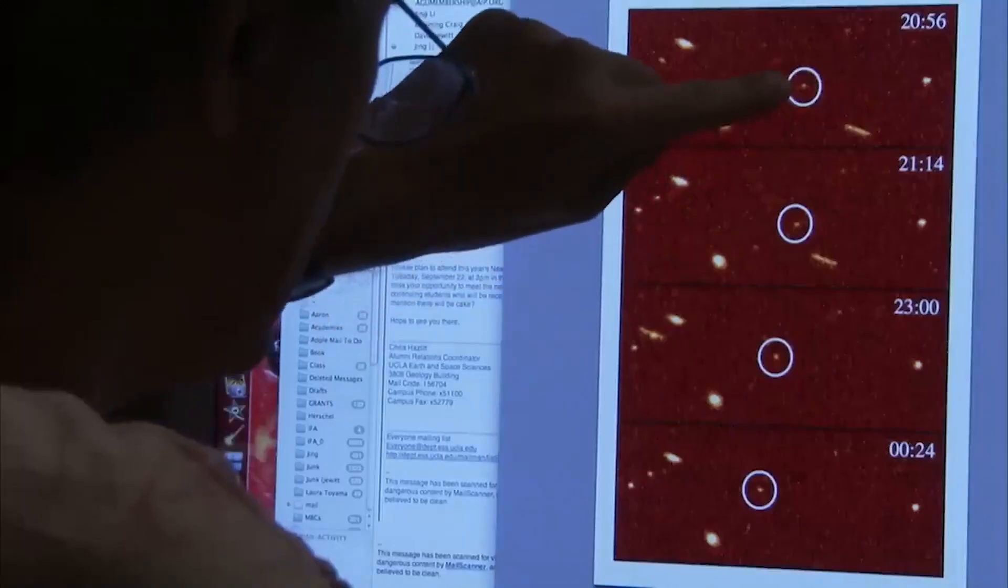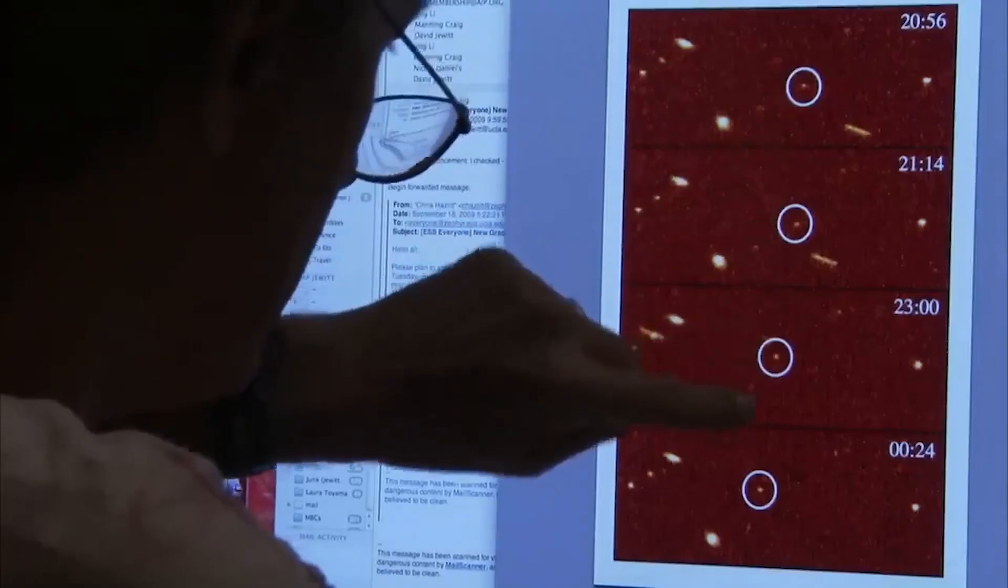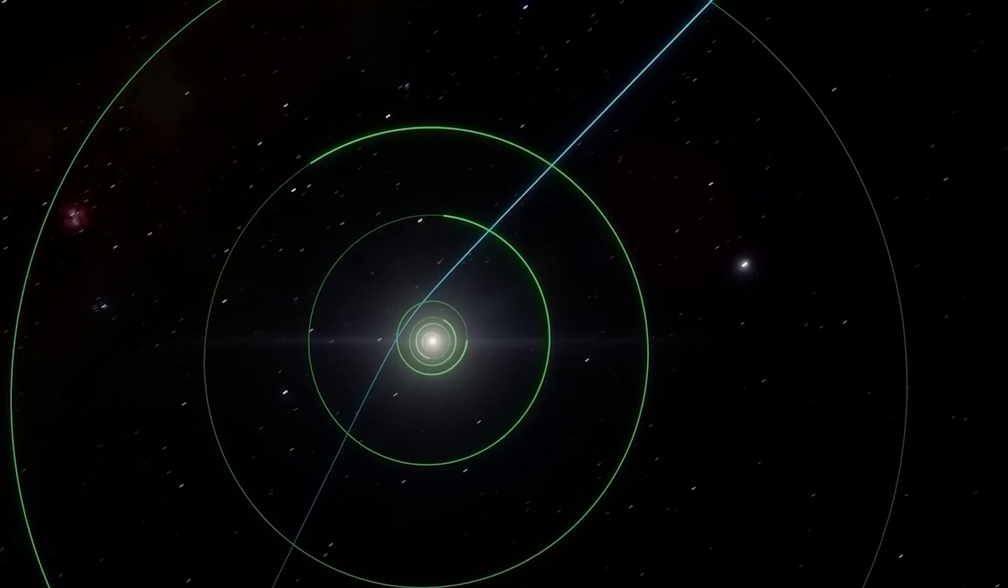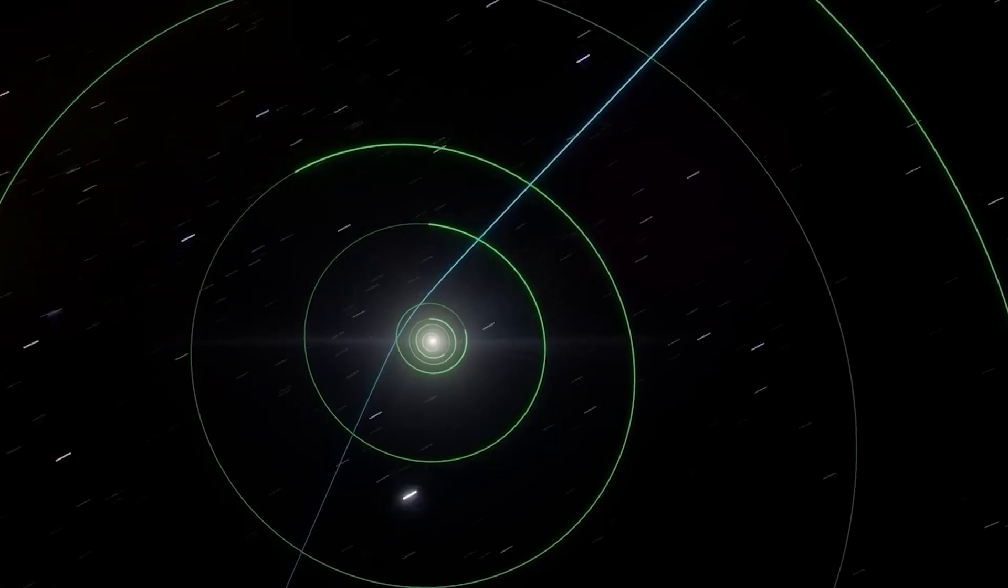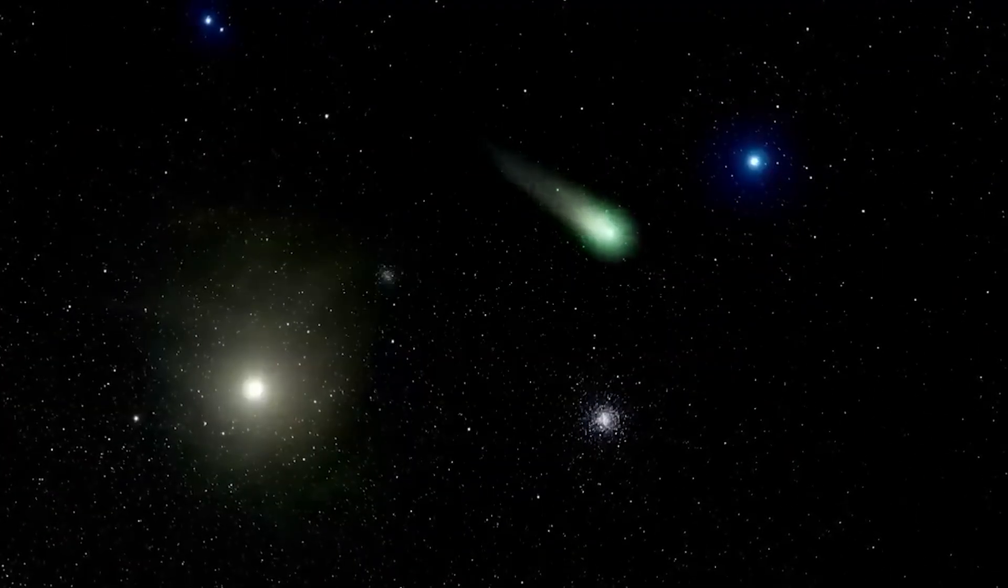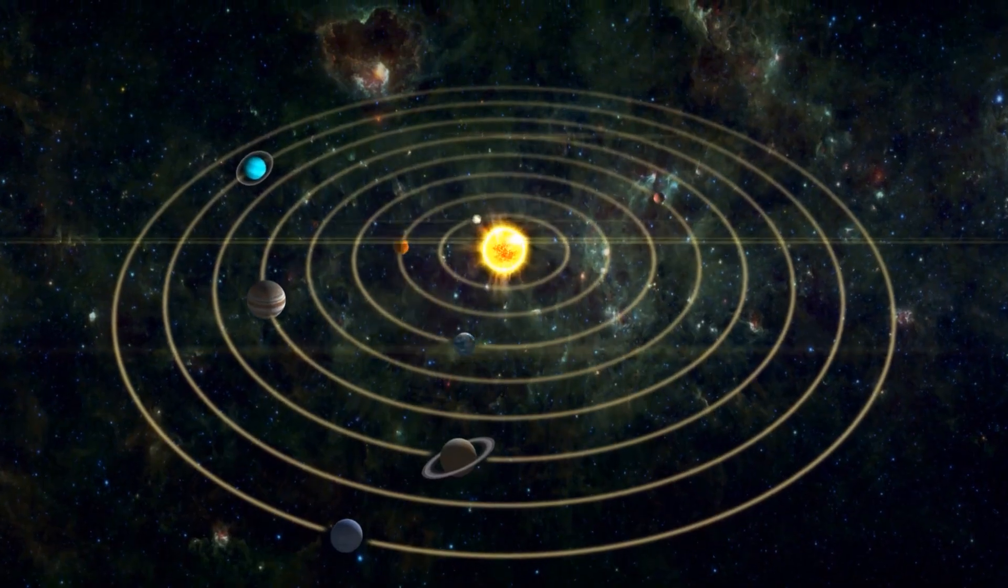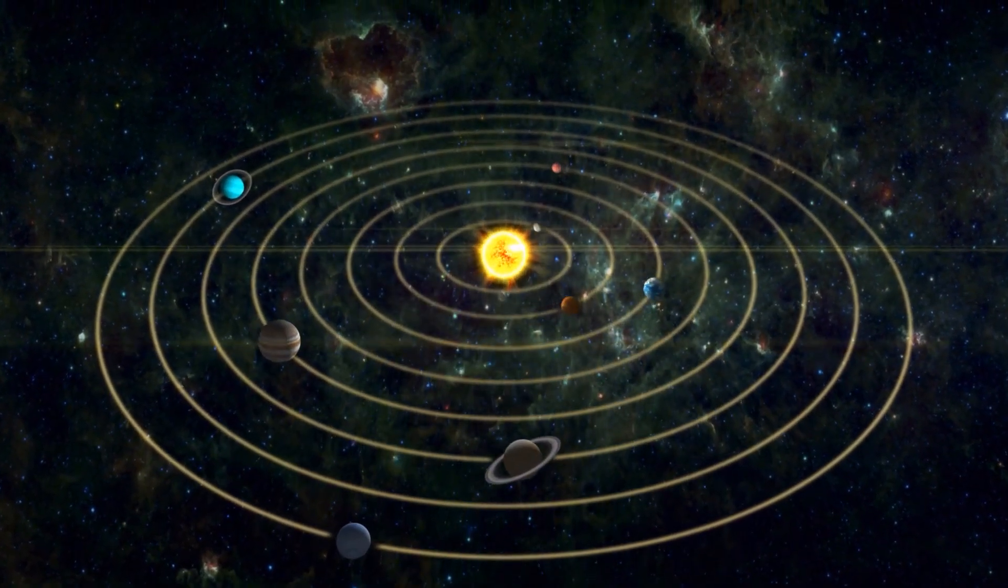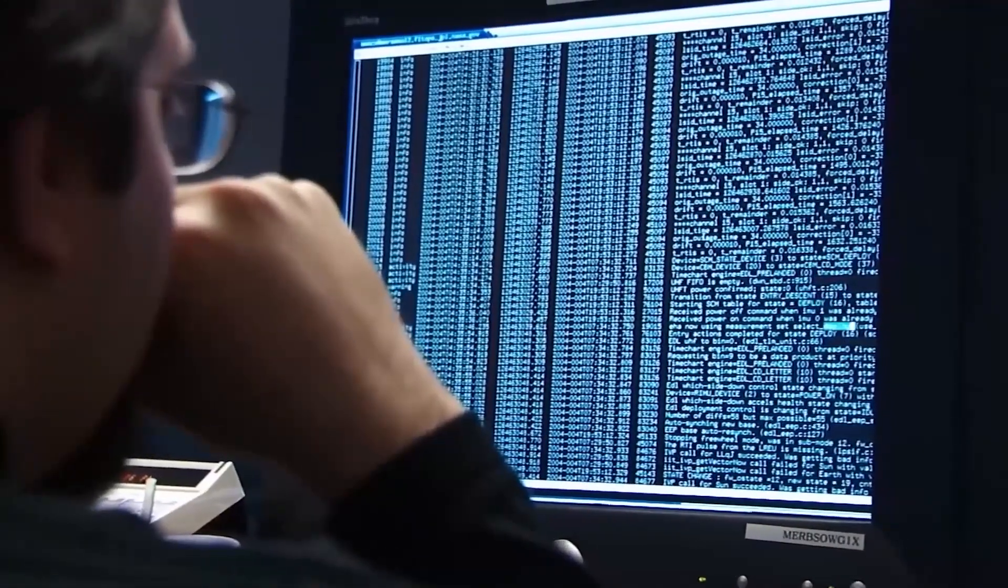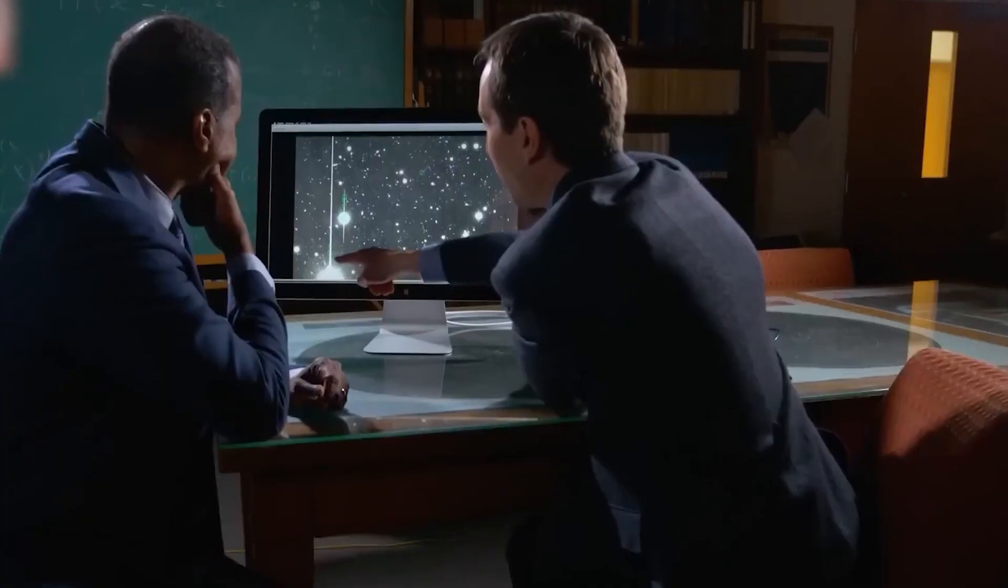The most shocking fact is that this makes 3I Atlas one of the most carbon-rich comets ever observed. It's an absolute chemical freak of nature. This isn't just a minor detail. It's a fundamental clue that this comet has a very different history from the thousands of others we've studied. It's as if we found a message in a bottle from the dawn of the solar system, but the message is written in a language we've never seen before.